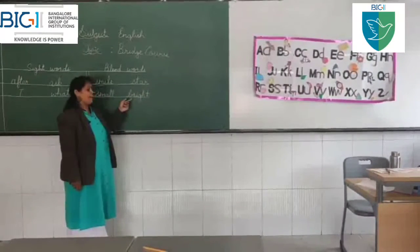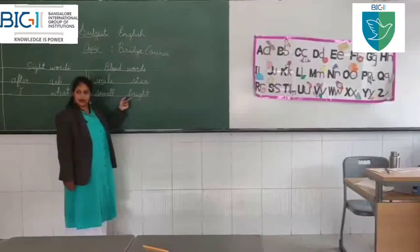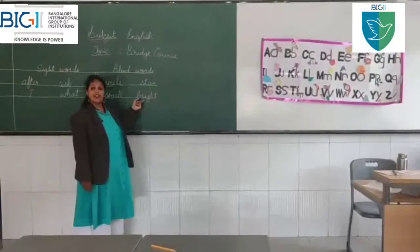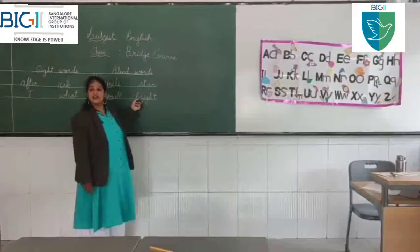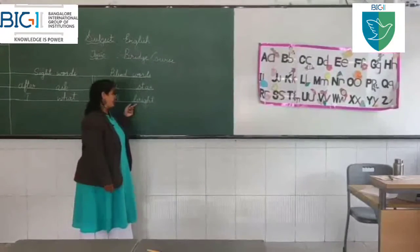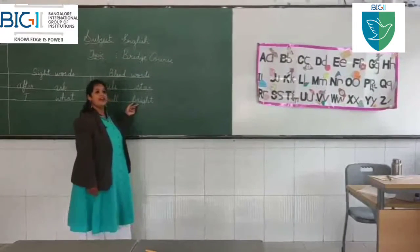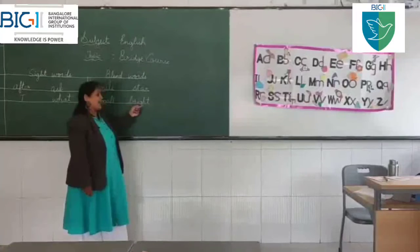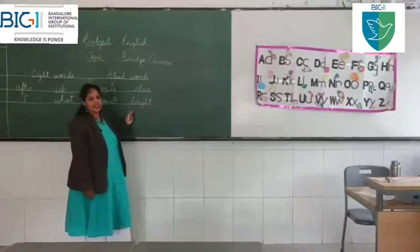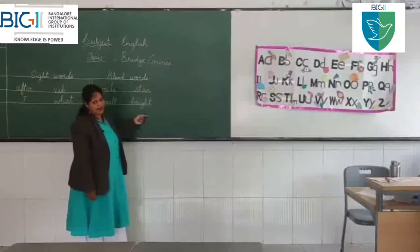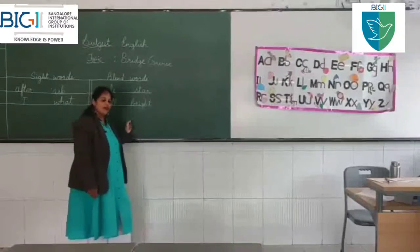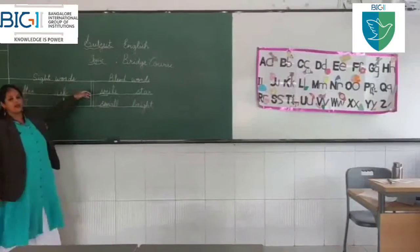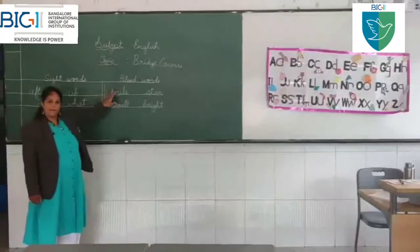And B-R together will give the 'br' sound. Add I-G-H-T and you'll get 'bright'. I hope all of you understood the difference between sight words and blend words.